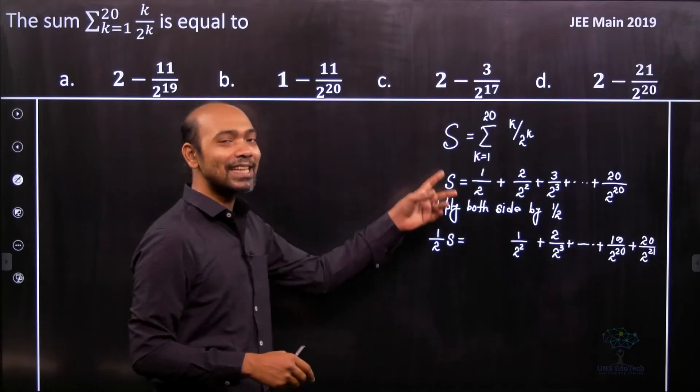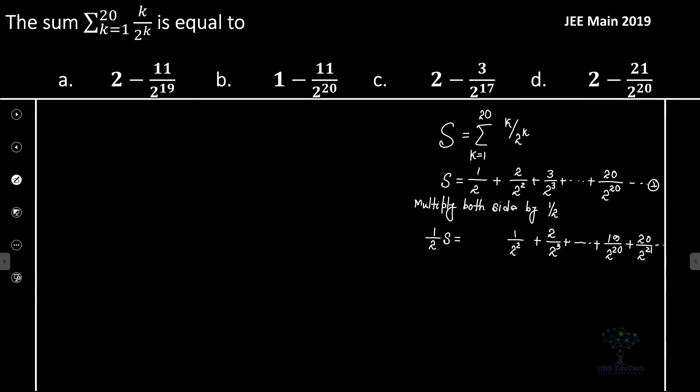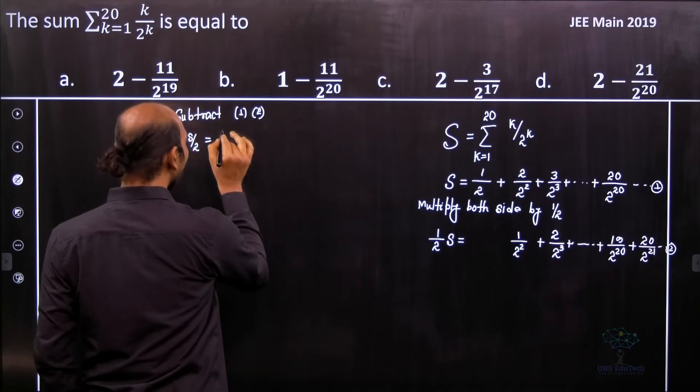Now we'll subtract these two. So I named it as equation number 1. This is obviously equation 2. Now if I subtract 1 and 2, obviously we'll get s in a beautiful form. So subtract 1 and 2, we'll see that s minus s by 2, it's definitely equal to s by 2. Now if I subtract, what is it? Let's write down half.